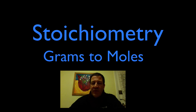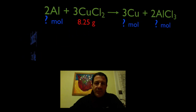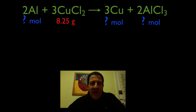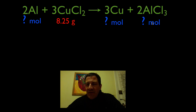We're going to be given the grams of one of the substances in our chemical equation and figure out how many moles we need to produce that many grams, or how many moles of the other product we're going to produce. We're going to be given 8.25 grams of copper chloride, and we want to know how many moles of aluminum we need to react that many grams.